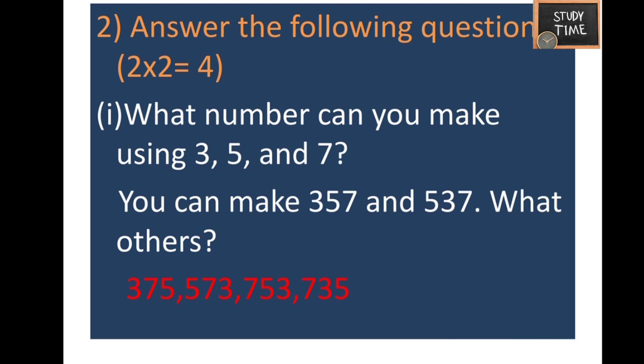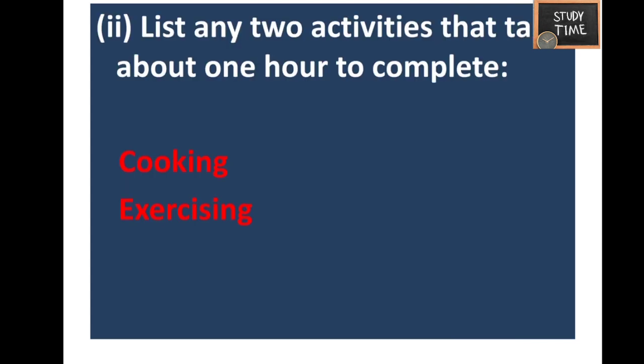What numbers can you make using 3, 5, 7? You can make 357 and 537. Other numbers are 375, 573, 753, and 735. Next: list any two activities that take about one hour to complete.